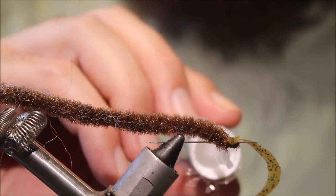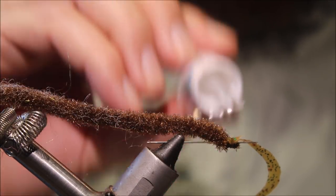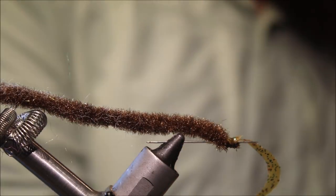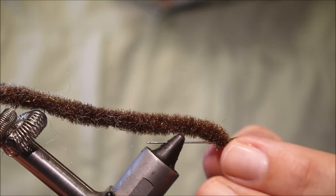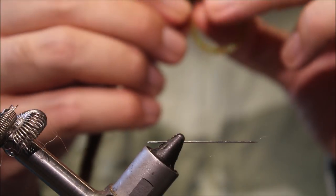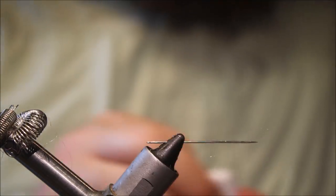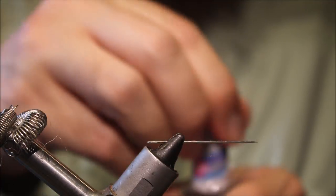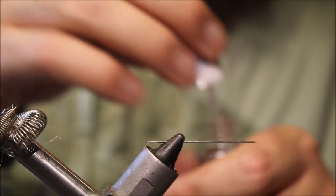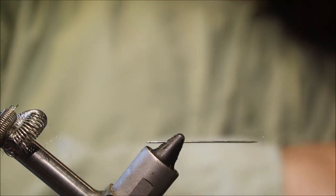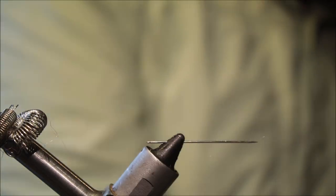Now, just seal these thread wraps with some head cement. Be generous. Right, because it's quite a soft material and it's just these exposed threads. There's not much holding everything here. And then we're ready to progress with the rest of the fly.